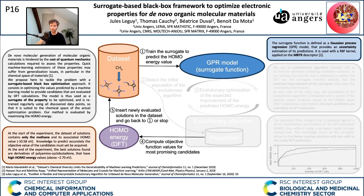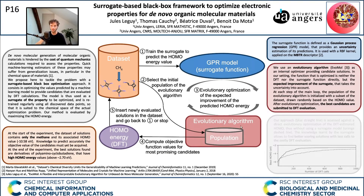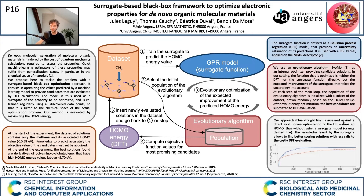New candidate molecules are obtained at each step by using an evolutionary algorithm to maximize the expected improvement of the surrogate function. This is very similar to Bayesian optimization, but the evolutionary algorithm allows us to generate solutions in the whole chemical space. We evaluate our method on the maximization of the HOMO energy and show that it can find high-scoring molecules using fewer calls to the costly property than a purely evolutionary approach. Our approach based on a surrogate model that is learned iteratively can limit the evaluations and thus the optimization time for a costly property.